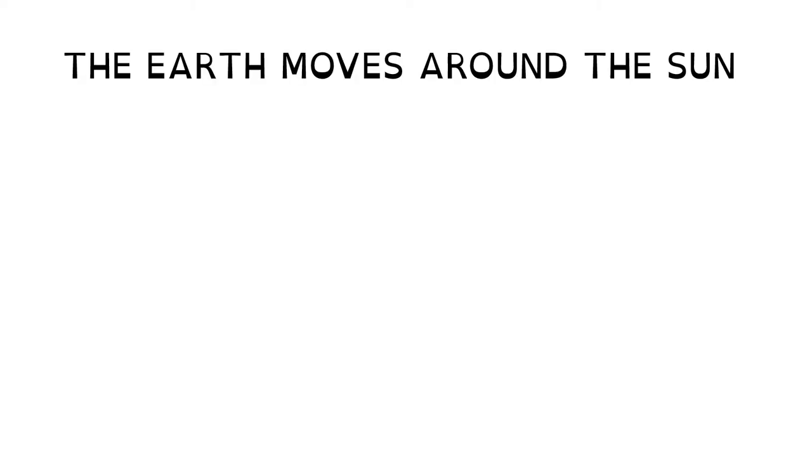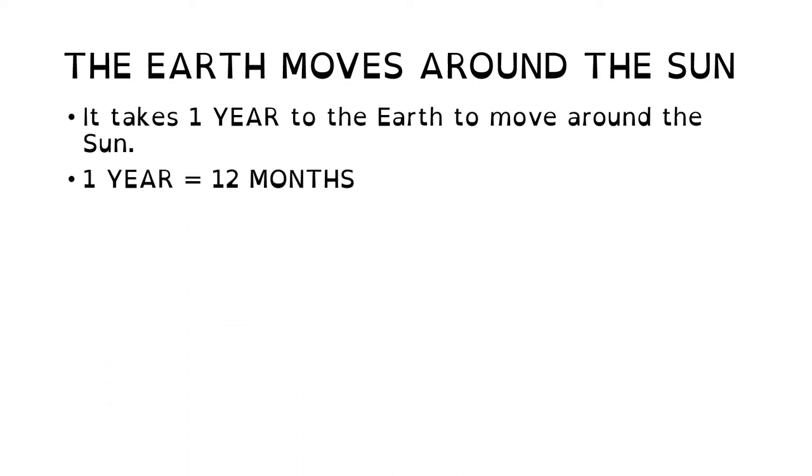The Earth moves around the Sun. It takes one year for the Earth to move around the Sun. One year is the same as 12 months.